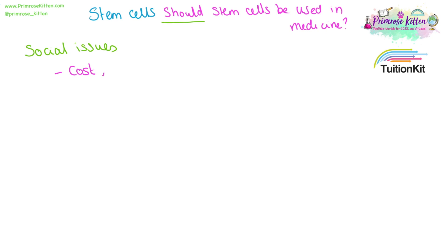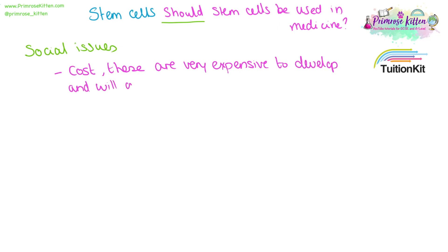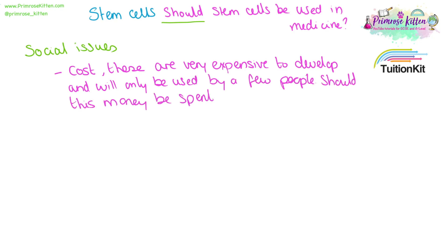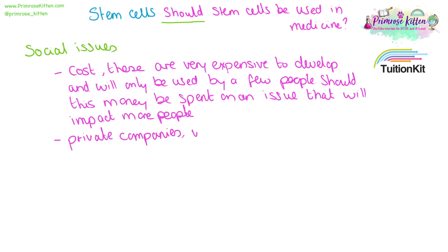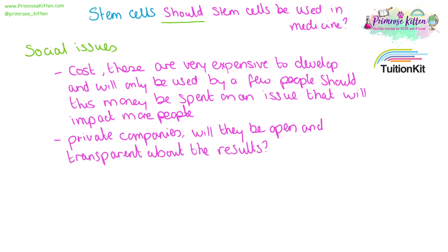Here are a few social issues to consider when talking about stem cells. Cost: these are very expensive treatments to develop and they will only be used on a limited number of people. Should this money be spent developing something that will be used on more people? Because of the cost and the specialist nature, private companies are the ones who are generally developing this. Will they be open with their results? Will they be willing to share their data with other companies, or will they try and keep things behind closed doors?